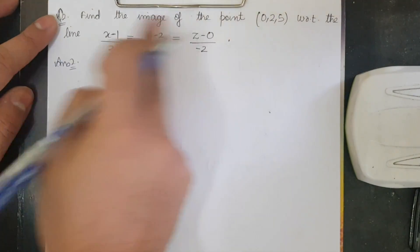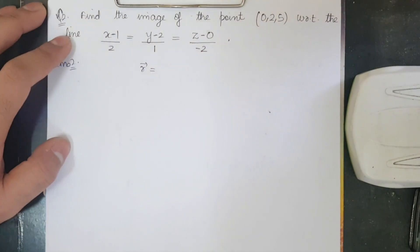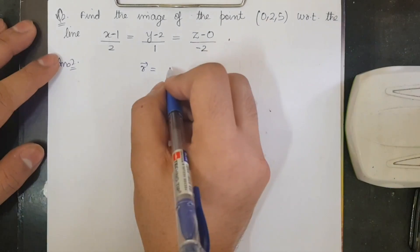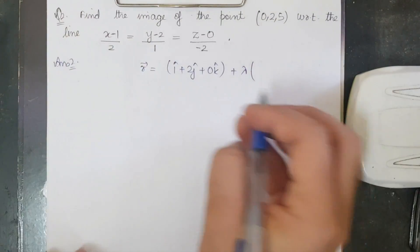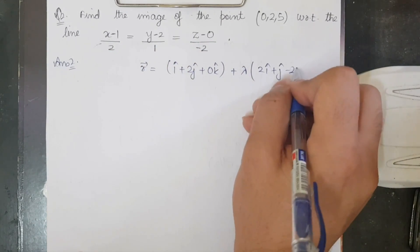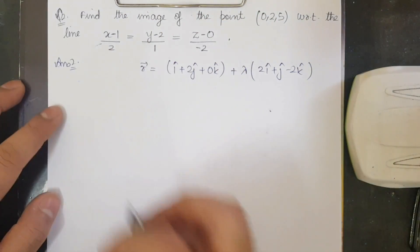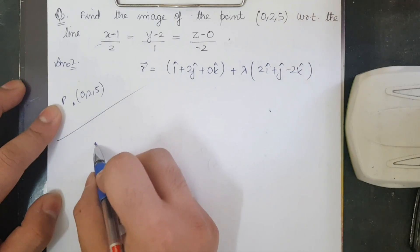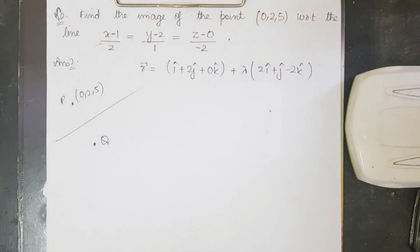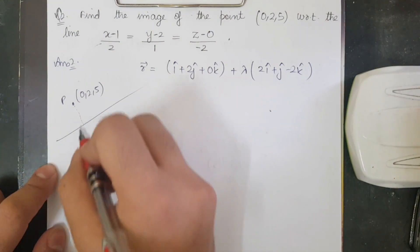Now let's look at 3D lines. We have a line given in Cartesian form. Let me convert it to vector form — it passes through (1, 2, 0), so the position vector is i̅ + 2j̅ + 0k̅, plus λ times the direction ratios of the line which are 2i̅ + j̅ − 2k̅. The question is to find the image of a given point P with respect to this line. The structure is: you have a line and a point P in space, and you need to find the image Q.